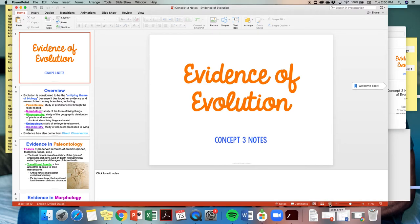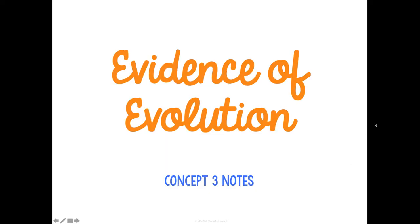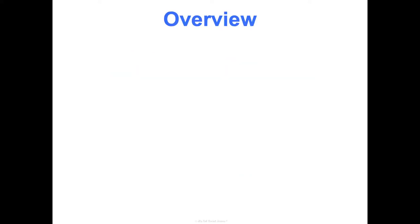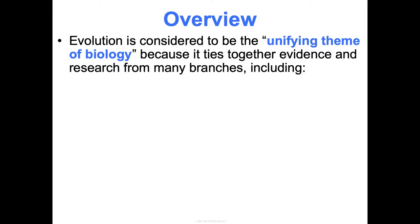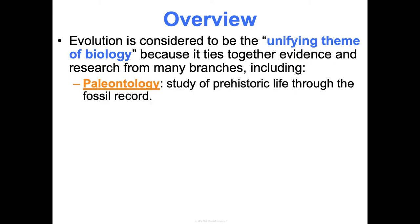This is concept three notes. We're going to talk through evidence of evolution — a brief overview of where we get evidence for all the stuff we've been teaching you. Evolution is considered to be the unifying theme of biology because it ties together evidence and research from so many different branches of biology. If you're using my Cornell note outlines, go through each and define each of these, and then we'll come back and fill in explanations of how they provide evidence one by one.